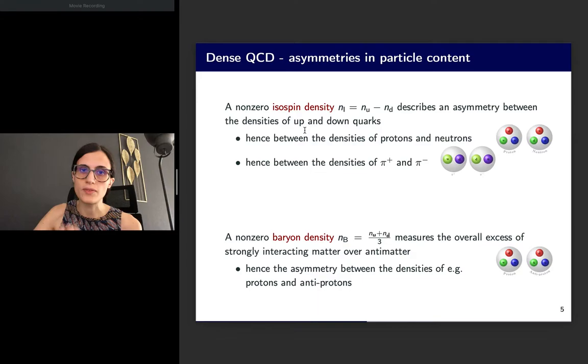In particular, we can have non-zero isospin density, as on one of the axes of the phase diagram. This is a density describing an asymmetry between the densities of up and down quarks, which gets reflected into an asymmetry in the density of protons over neutrons and asymmetries between densities of positively charged pions and negatively charged pions. Another interesting density is non-zero baryon density, where we have an excess of strongly interacting matter over antimatter, and therefore an asymmetry in terms of densities of, for example, protons and antiprotons.